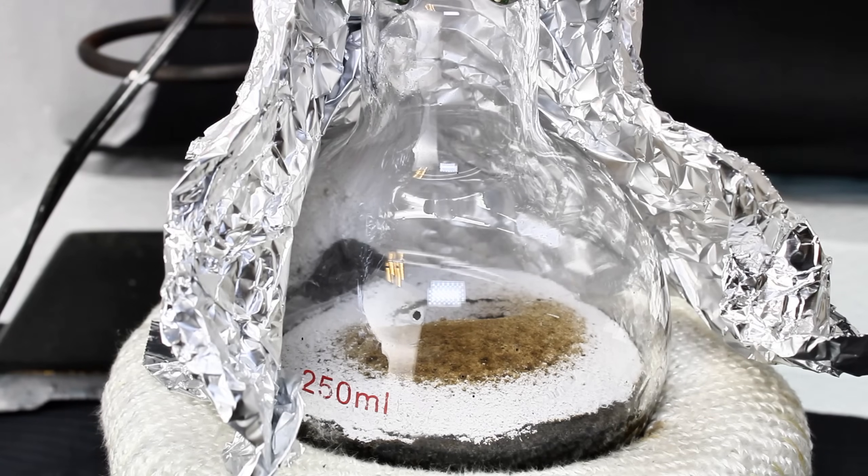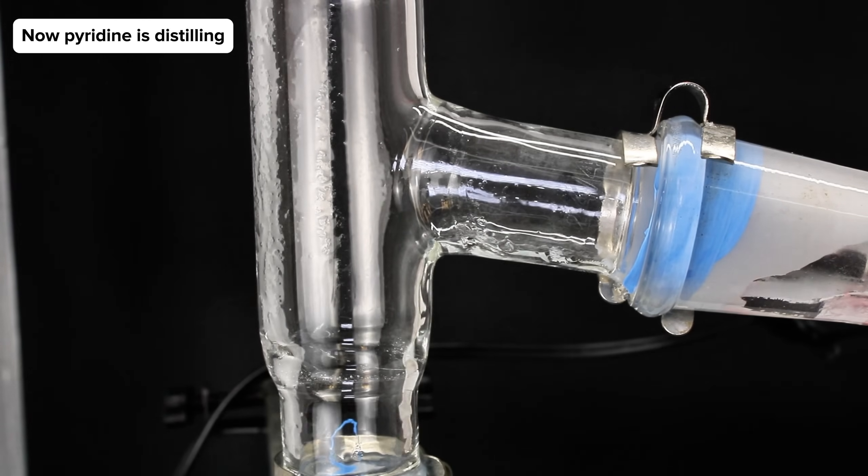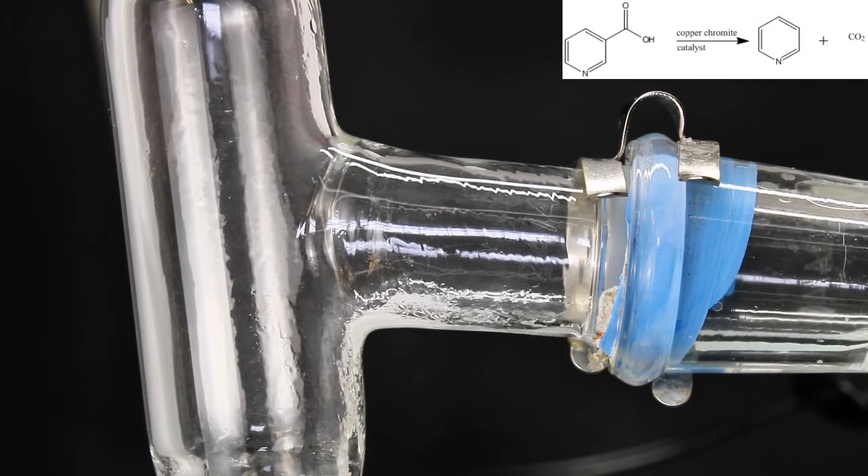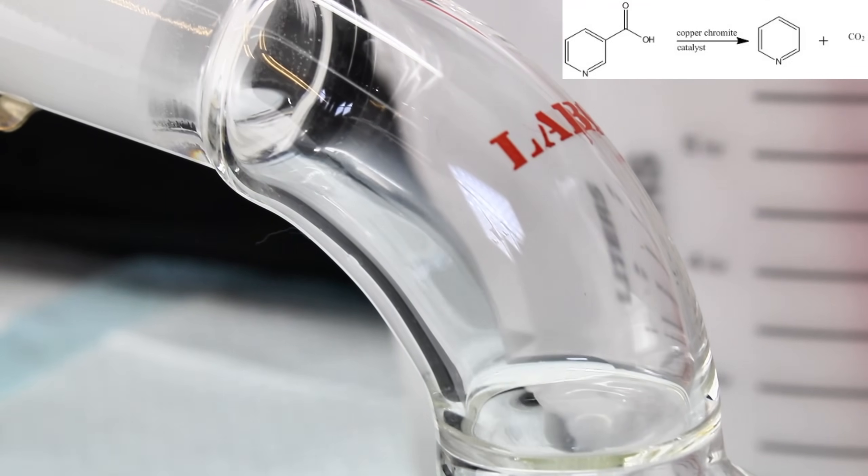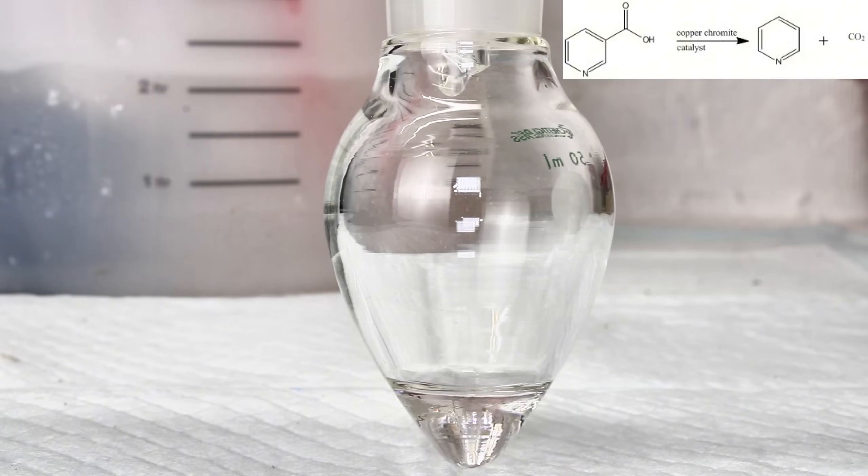After a little while longer, pyridine began to evaporate from the solid mass and distill over as a relatively clear liquid. What's happening here is a basic decarboxylation catalyzed by solid divalent copper. To put it even more simply, this is basically just an intentional thermal decomposition that produces pyridine and carbon dioxide.